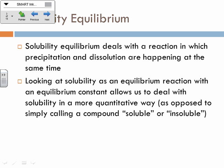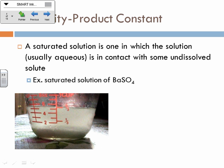So, solubility equilibrium — they're both happening at the same time. You're getting a precipitation and a dissolution, that's why it's in equilibrium. And this is going to happen in saturated solutions. It's like any equilibrium reaction; it's not really going to look like anything is happening once it reaches equilibrium. But what's really happening is that some solid is dissolving at any given moment, and some of the dissolved solid is re-precipitating. That's a saturated solution of BaSO₄.